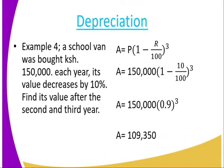We now go to depreciation. A school van was bought at 150,000. Each year its value decreases by 10%. Find its value after the second and third year. For the third year, with time equal to 3, you get 109,350. For the second year, instead of 3 you raise it to the power of 2. You can see how easy mathematics is.